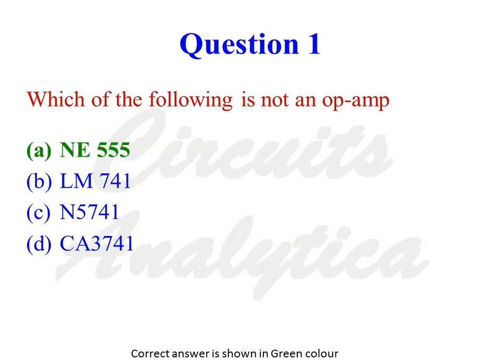Which of the following is not an op-amp? The options are NE555, LM741, N5741, and CA3741. The answer is NE555. NE555 is a Timer IC.